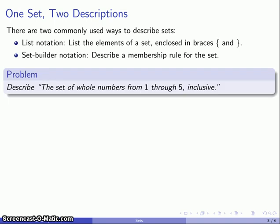For example, let's describe the set of whole numbers from one through five, inclusive. In list notation, I'm just going to list the things in the set and enclose them with curly braces. So the elements are going to be one, two, three, four, and five, and I enclose the entire set with the end brace: {1, 2, 3, 4, 5}.